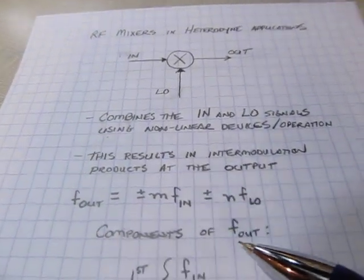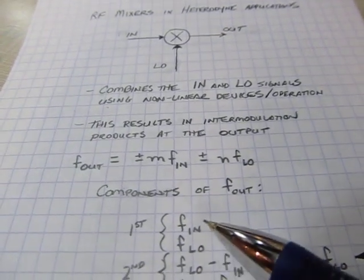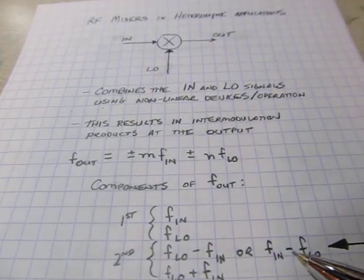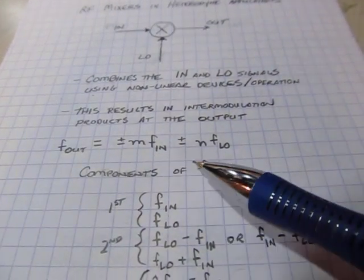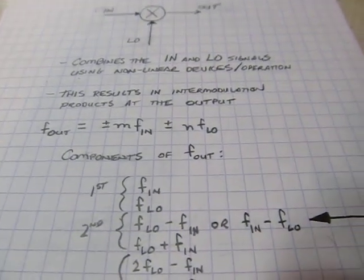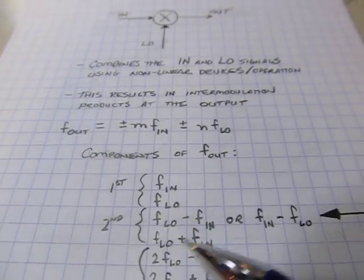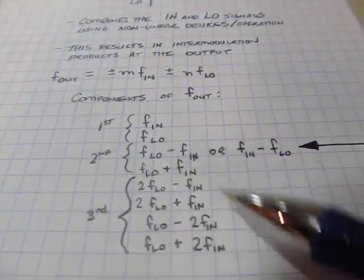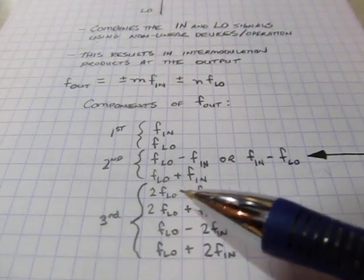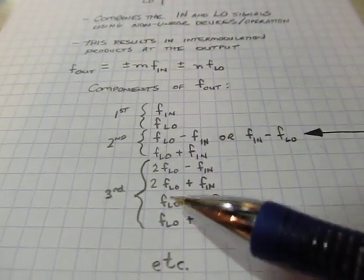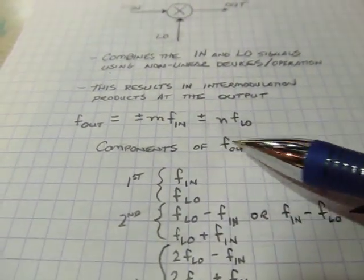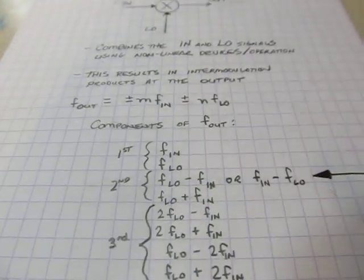For example, the first order products will be just the input frequency and the LO frequency. You'll also get second order products, which will be the difference between the two input frequencies. And sometimes it'll be either the LO minus the input or the input minus the LO, depending on which one is higher. You'll also get the sum of those two. Those are called second order products. Then the third order products will be, you know, say two times the LO minus the FIN or two times the LO plus FIN, et cetera. And it goes on and on for various values of M and N, just different integer values of the input frequency and the LO frequency.